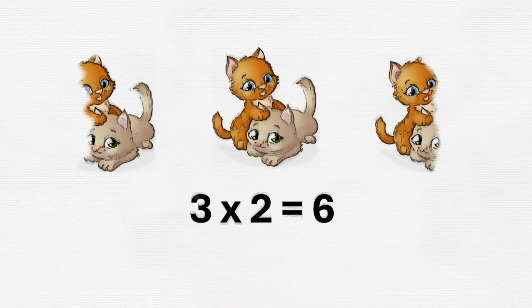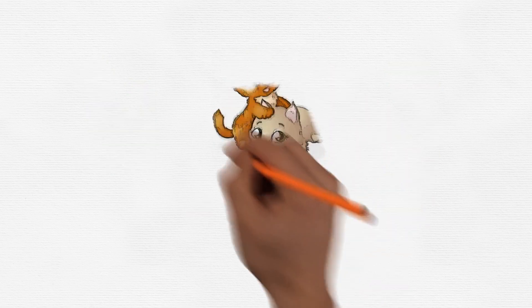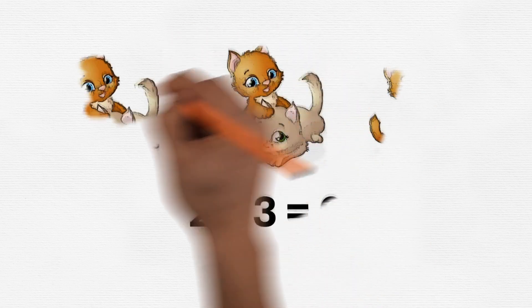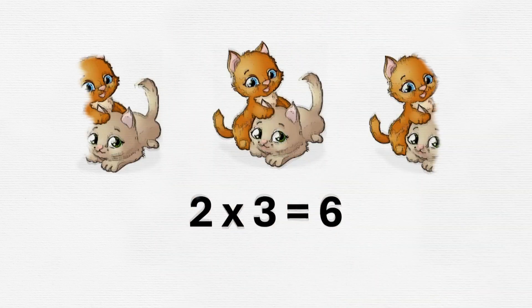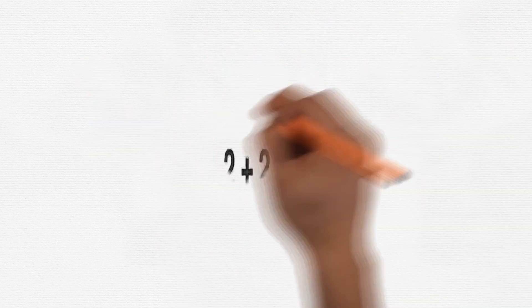We can also say two times three, and that's the same as saying two multiply by three, which is equal to six. Isn't that cool? Let's be multiplication explorers!